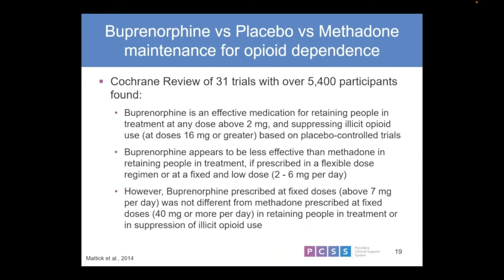A large Cochrane review of 31 trials covering over 5,400 patients compared buprenorphine, placebo, and methadone. Buprenorphine was an effective medication in retaining people in treatment when doses were greater than 2 milligrams, and there was suppression of illicit drug use at doses of 16 milligrams or greater. Buprenorphine appeared less effective than methadone at lower doses of 2 to 6 milligrams, but when used at fixed doses of 7 milligrams or greater, there was not a significant difference between buprenorphine and methadone at doses greater than 40 milligrams, for both suppression of opioids and retention in treatment.